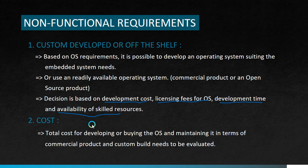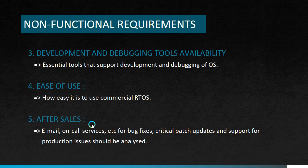The third non-functional requirement is the availability of development and debugging tools. The availability of these tools is a critical decision-making factor in the selection of an OS for embedded design. Certain operating systems may be superior in performance, but the availability of tools supporting development may be limited. We should explore the different tools available for the OS under consideration and find the essential tools that support development and debugging.